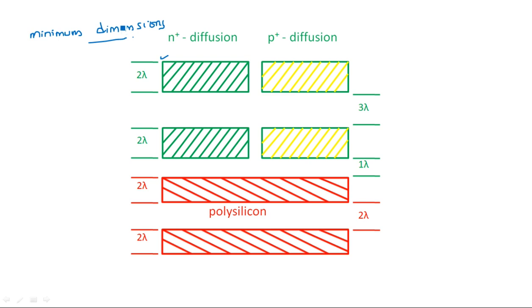Remember, all these are minimum dimensions — above that is accepted, but below is not. Coming to polysilicon, shown in red color, the polysilicon layer has a thickness of 2 lambda and must be separated by a distance of 2 lambda from another polysilicon line. If the separation is less than 2 lambda, there will again be capacitance action or an electrical contact between the two, so we must maintain all these design rules.